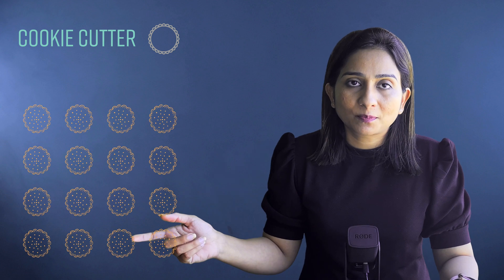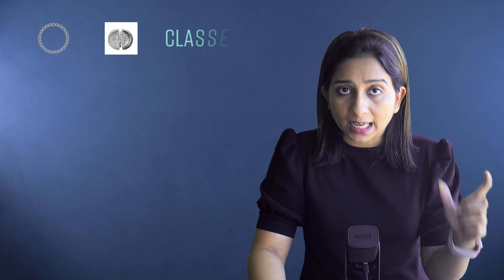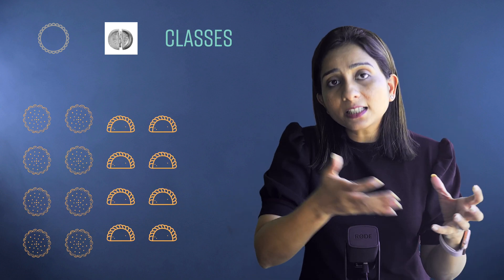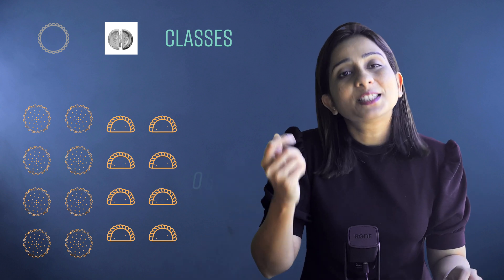A simple analogy to understand this is a cookie cutter. A cookie cutter is only one in count but it can create multiple cookies. Similarly, if you are Indian, you would know the Gujiya mold used in festivals — there is only one mold but you can create multiple Gujiyas. So the cookie cutter and the Gujiya mold are the classes, and the multiple cookies or Gujiyas they produce are the objects.